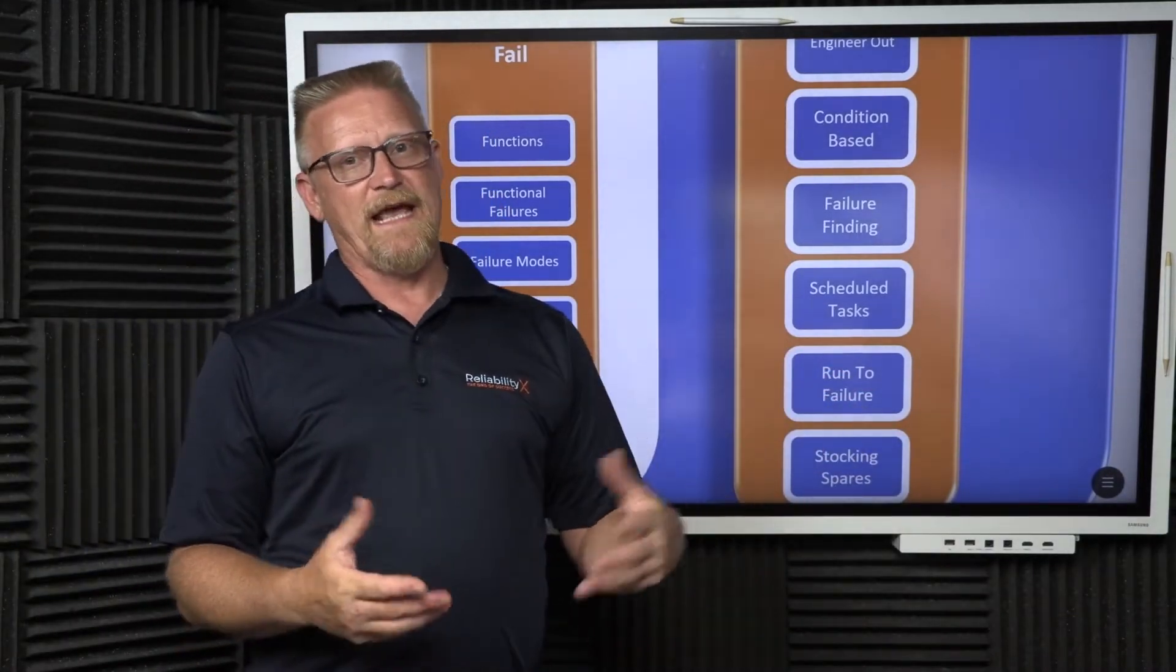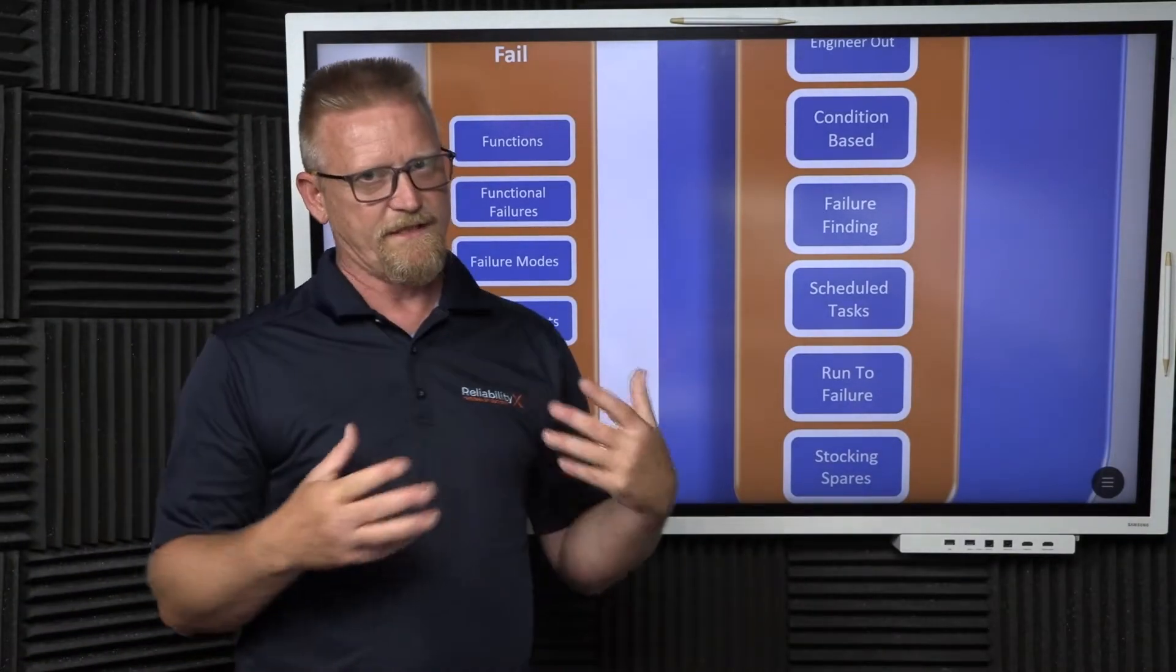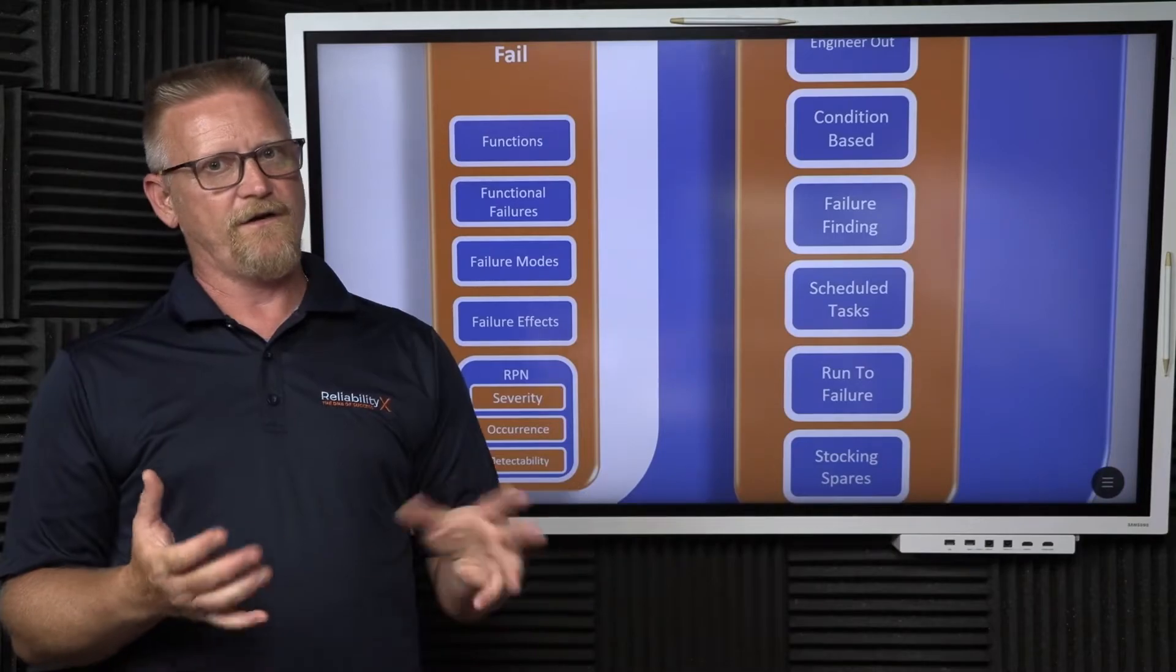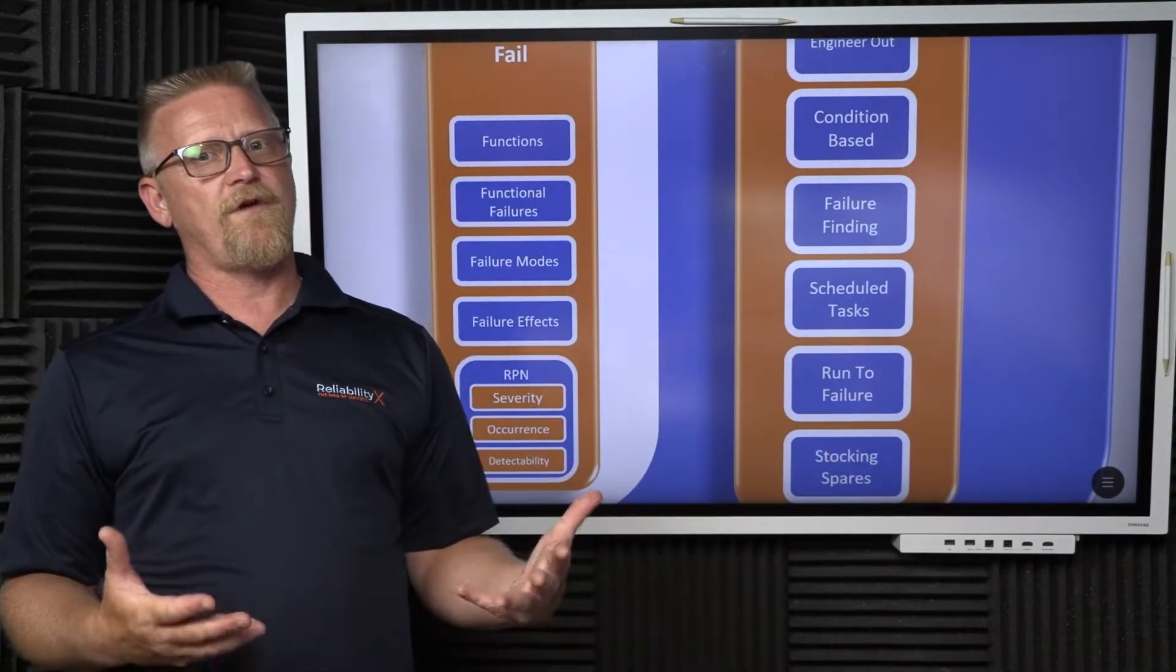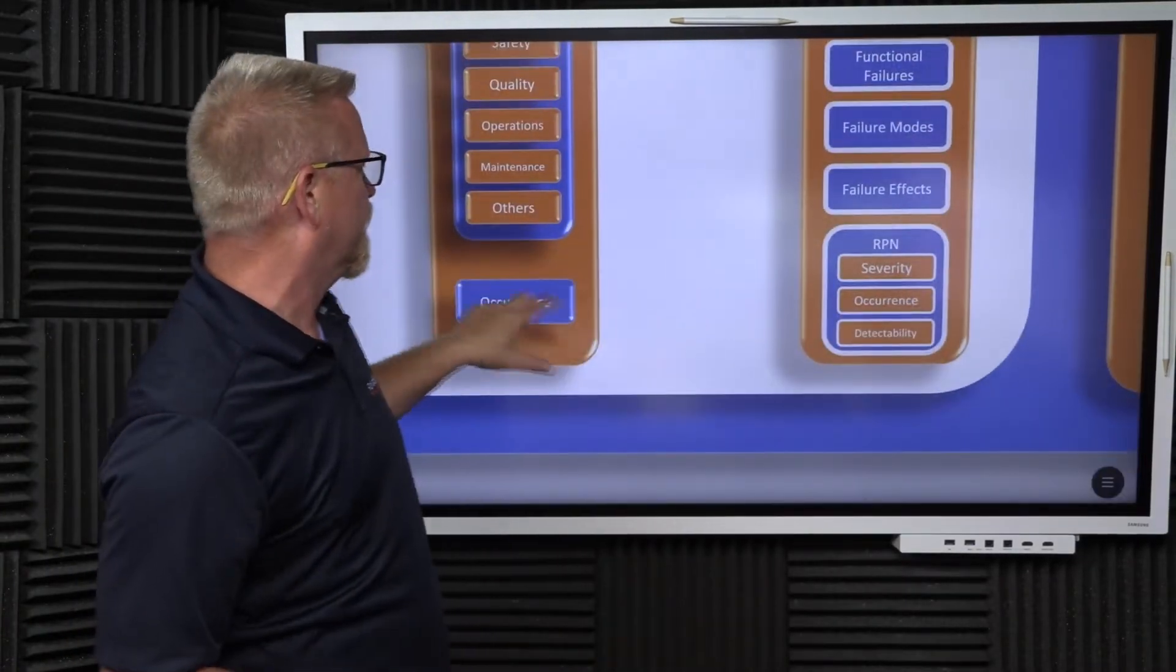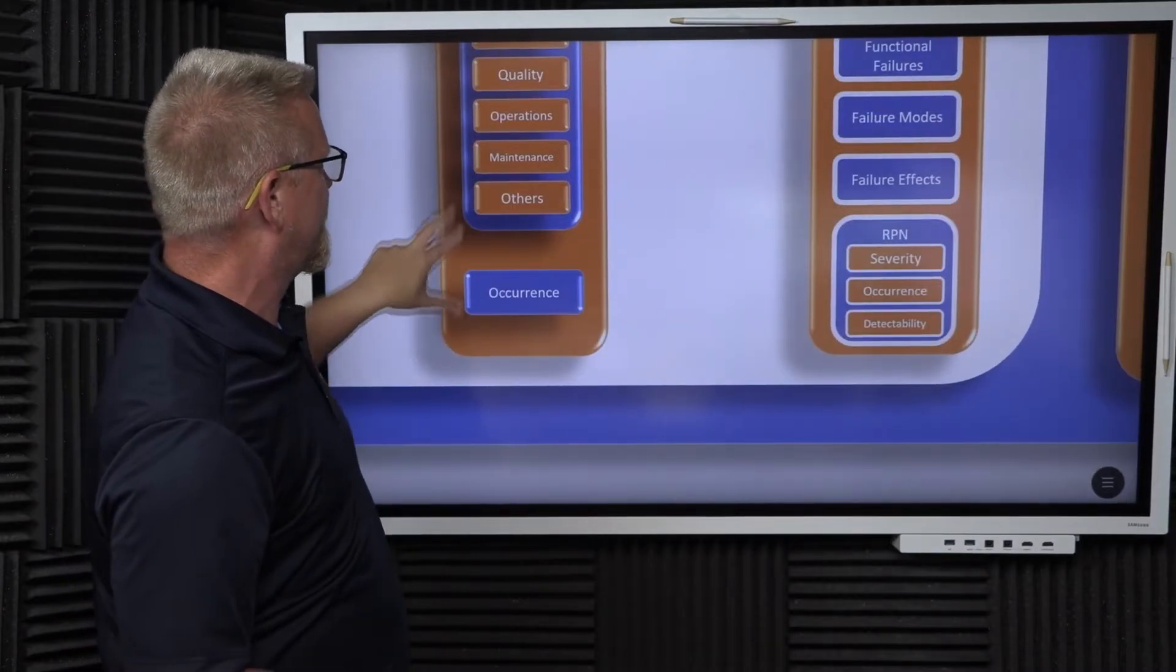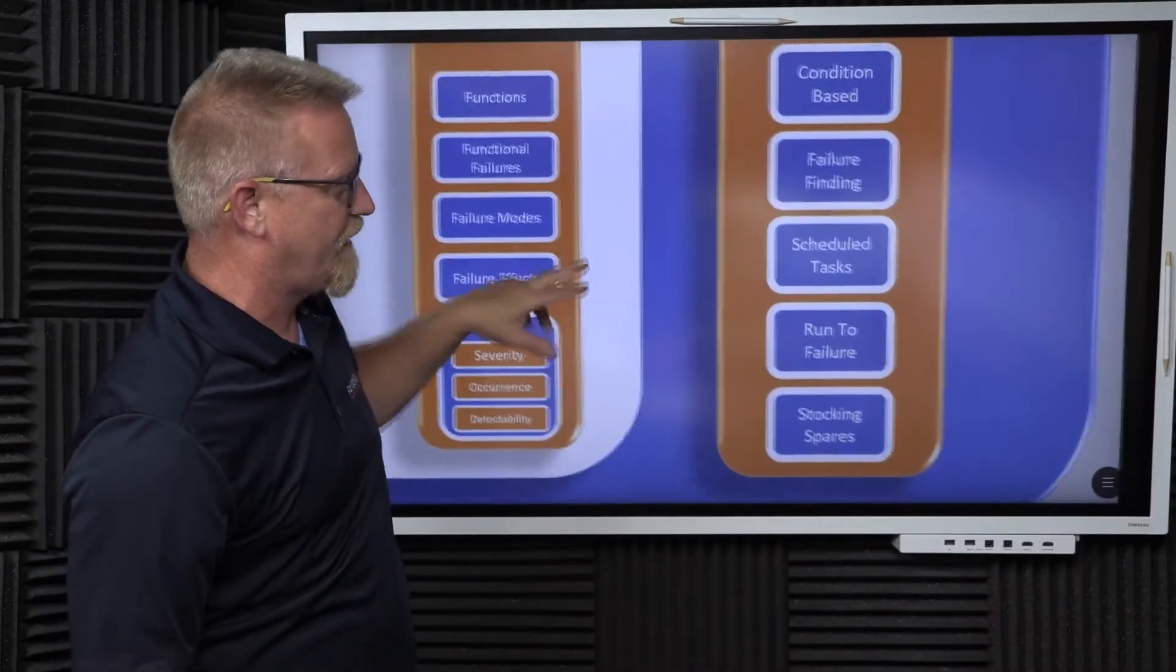And then maybe even scheduled tasks like scheduled restorations or replacements of wear components. Those things are scheduled tasks, whether they are time-based or cycle or duty-based. And in some cases, we're going to run to failure. Sometimes we're going to decide to run to failure based on how low the criticality number is. So if the criticality number is extremely low, we're going to run to failure anyway.